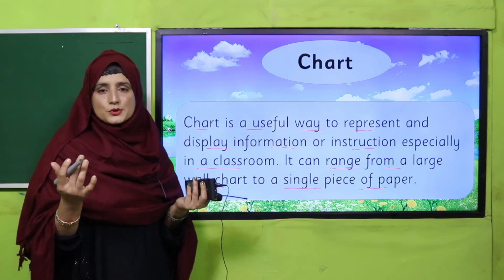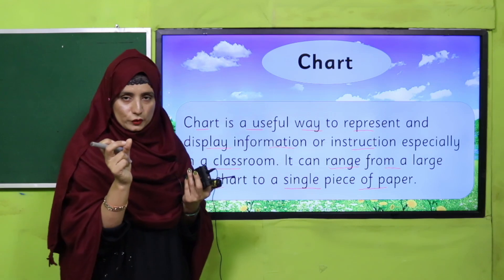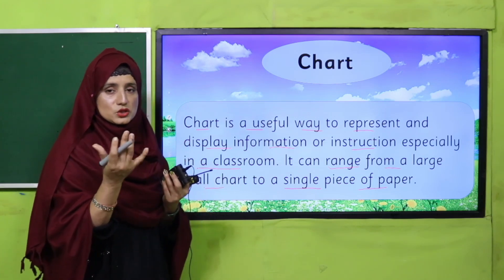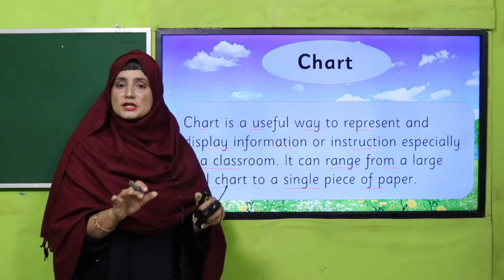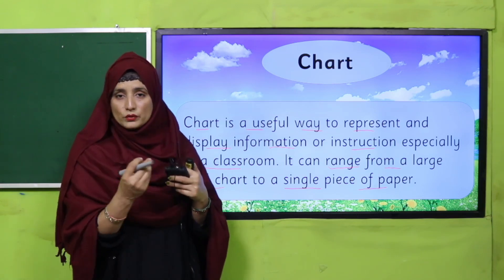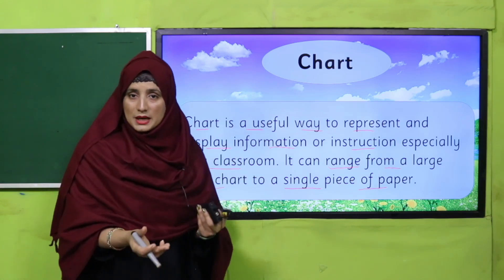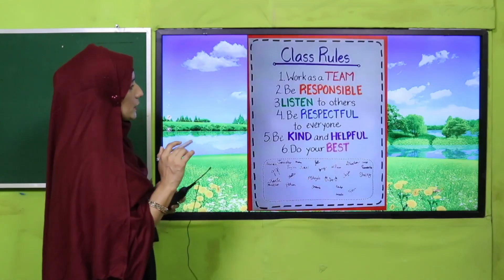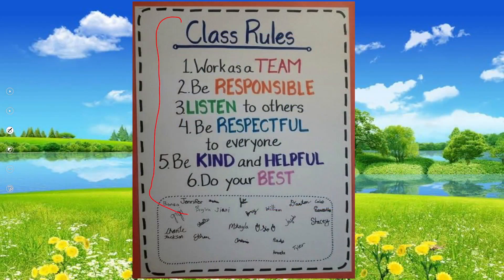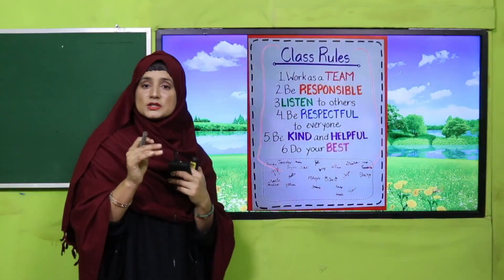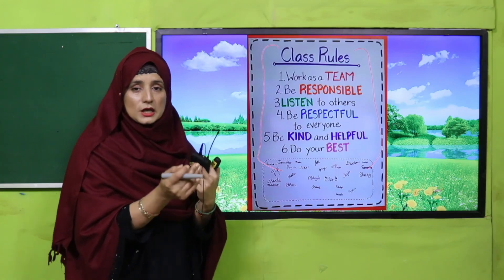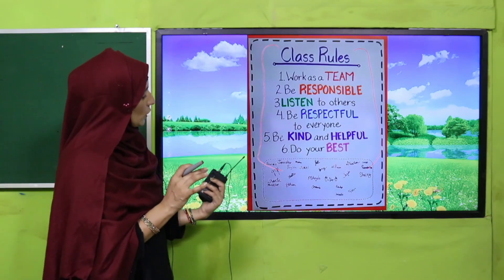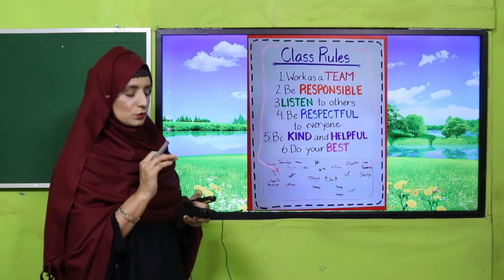There are many types of charts, each giving us specific information about what we have to do. Some charts tell us rules — how we have to sit in class, how we have to behave with each other. Some charts tell us about manners. For example, a classroom rules chart tells you how to sit, how to work in a team, and how to listen to others carefully.